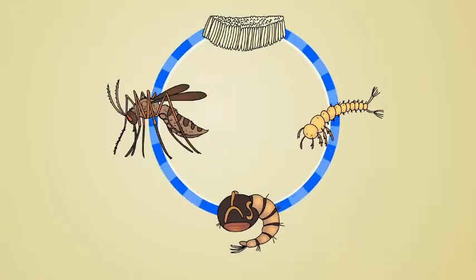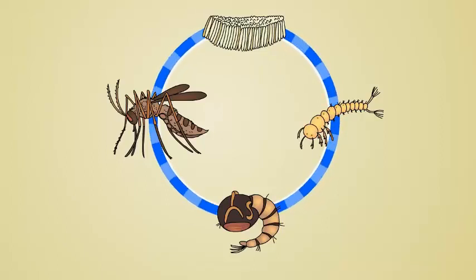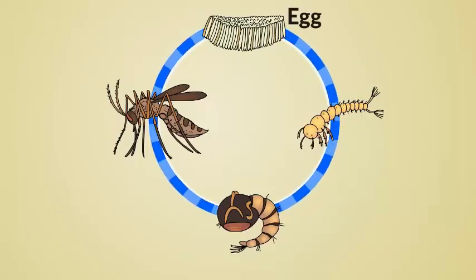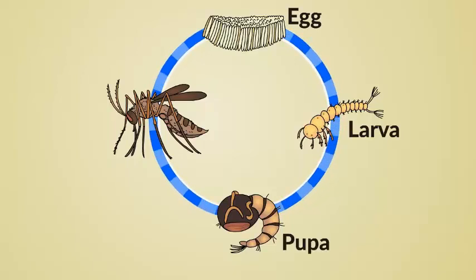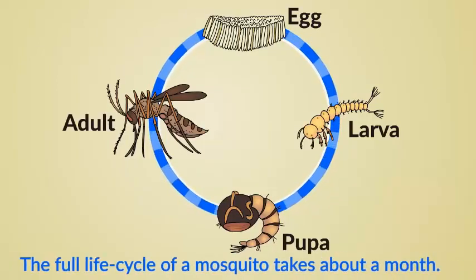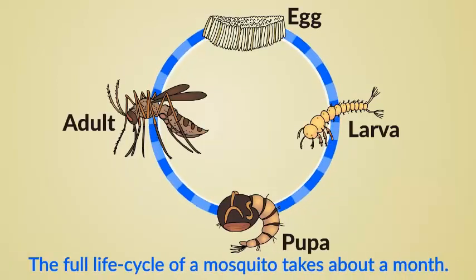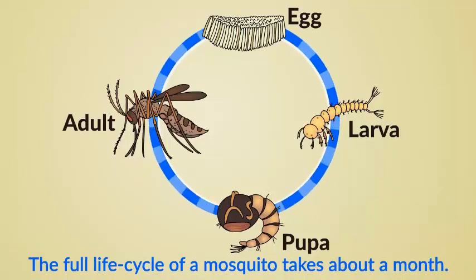Mosquitoes go through four stages during a lifespan. These four stages are egg, larvae, pupae, and adult. The full life cycle of a mosquito takes about a month. Let's learn about each stage one by one.